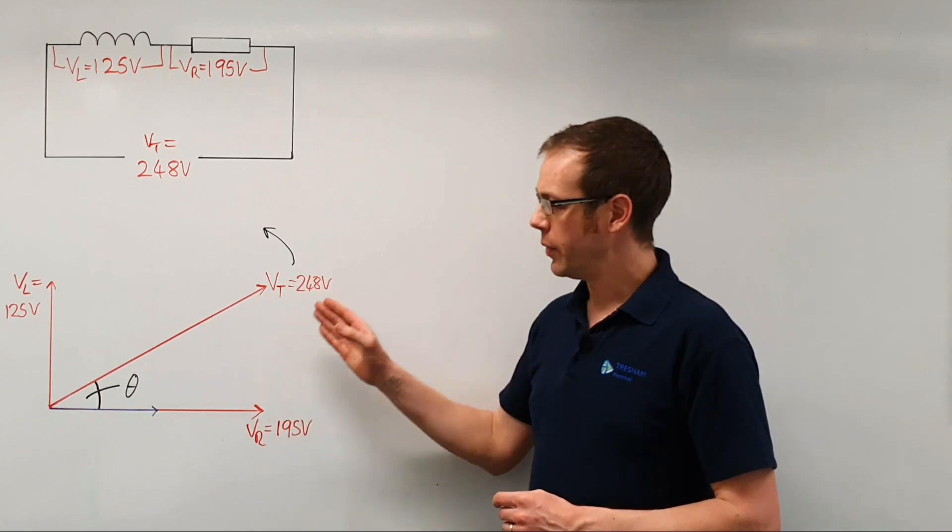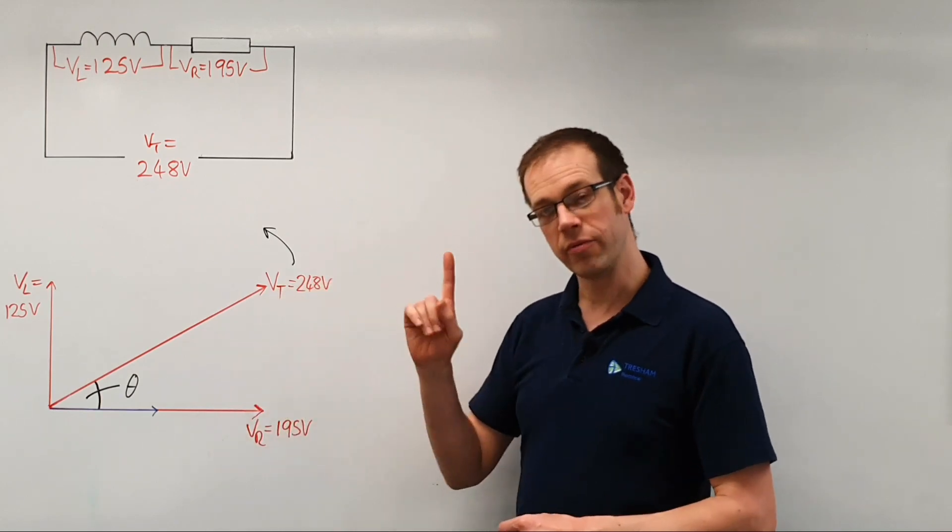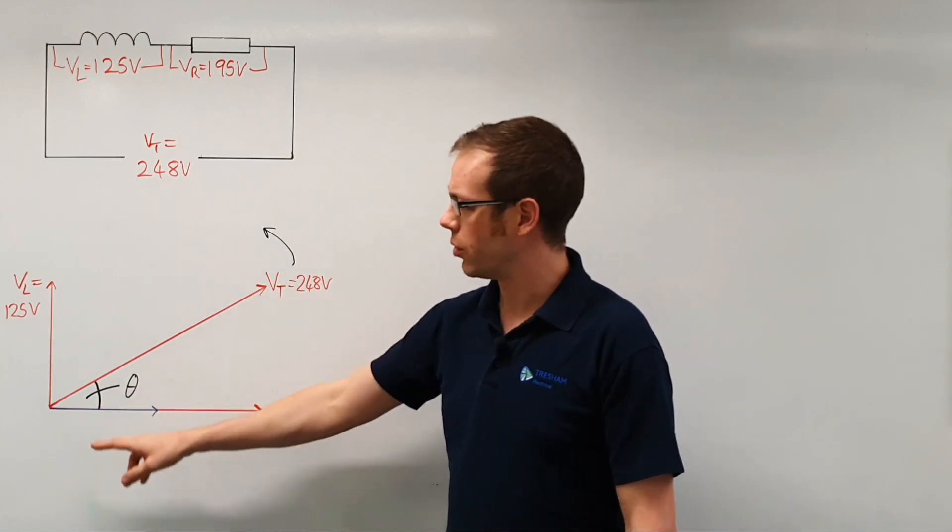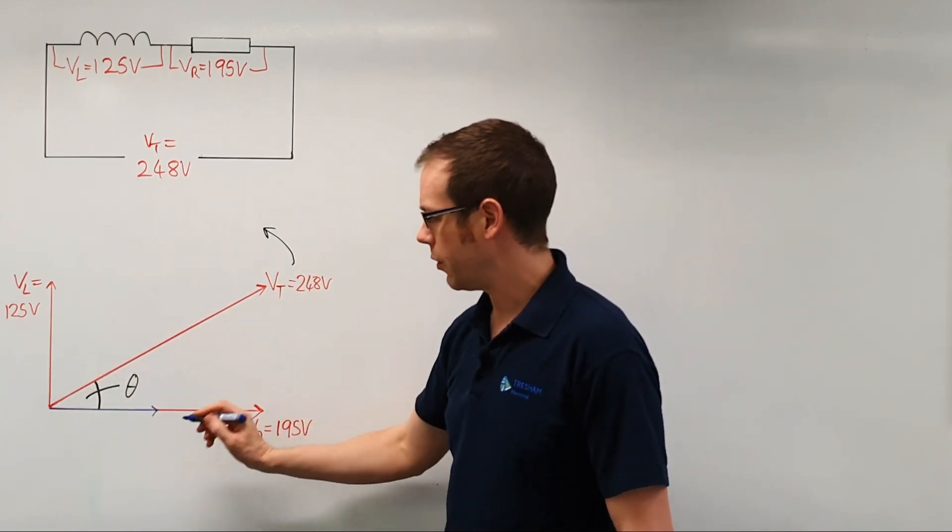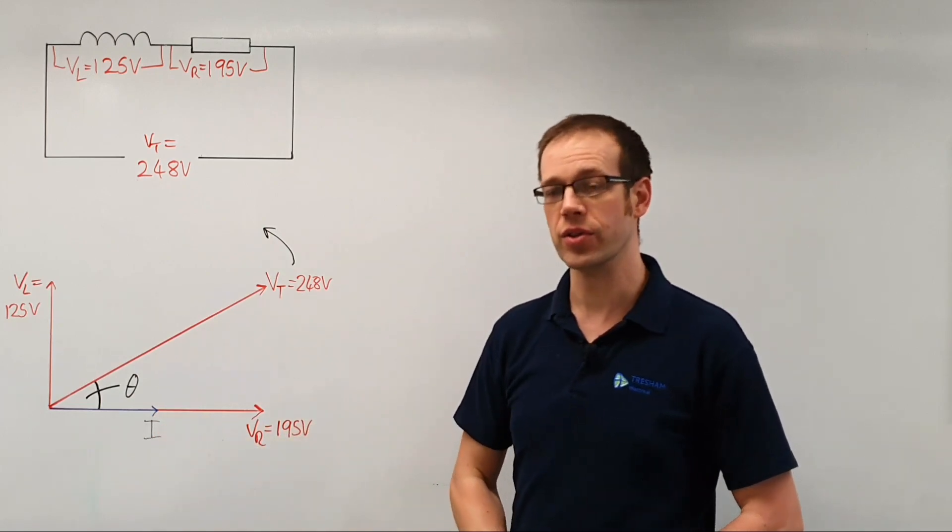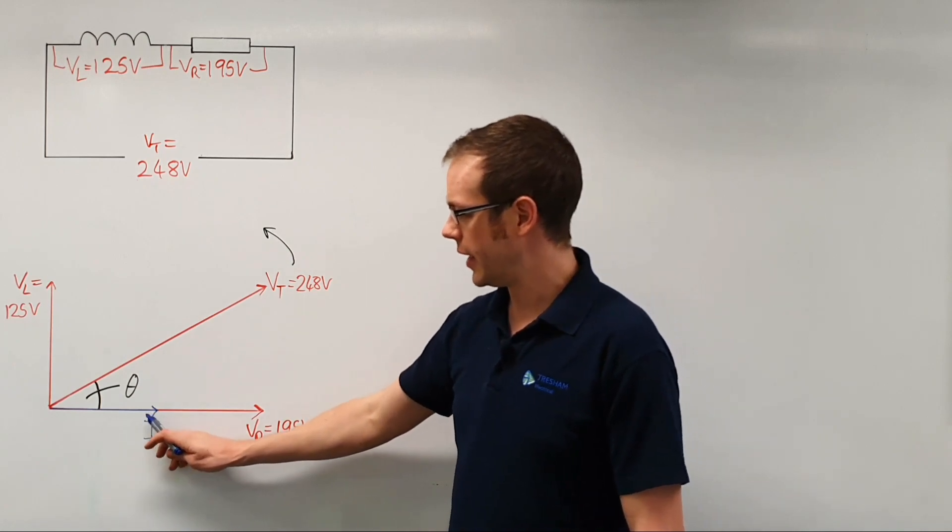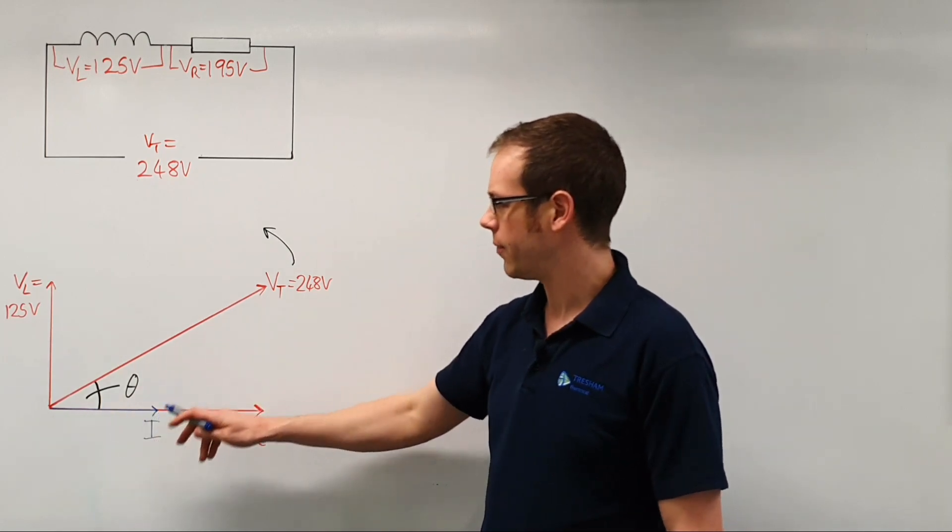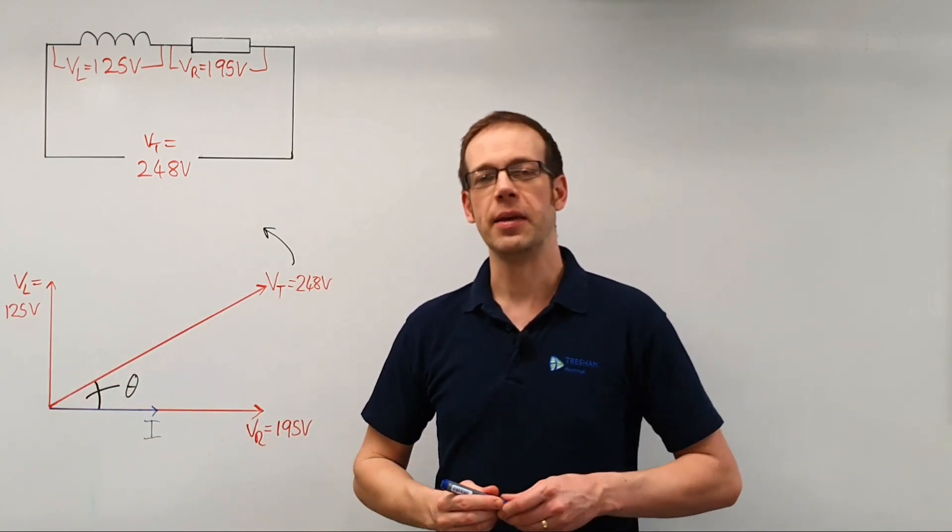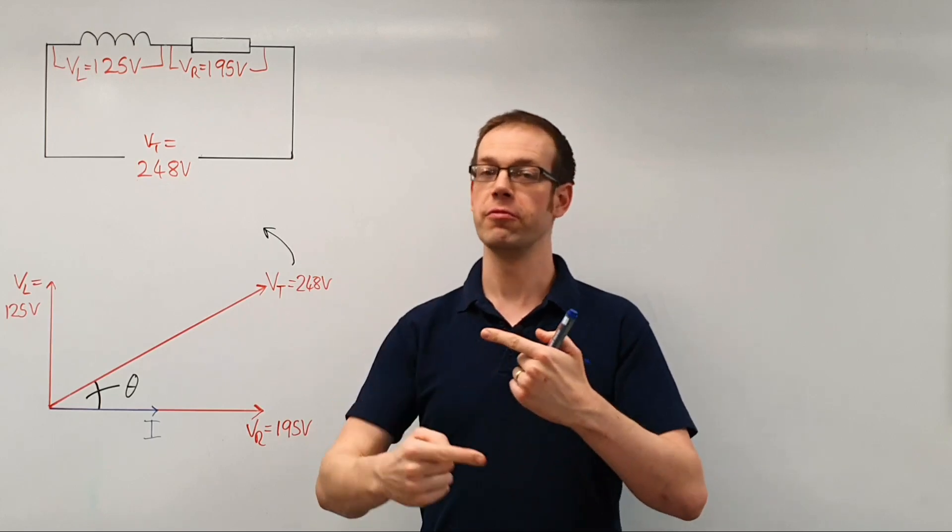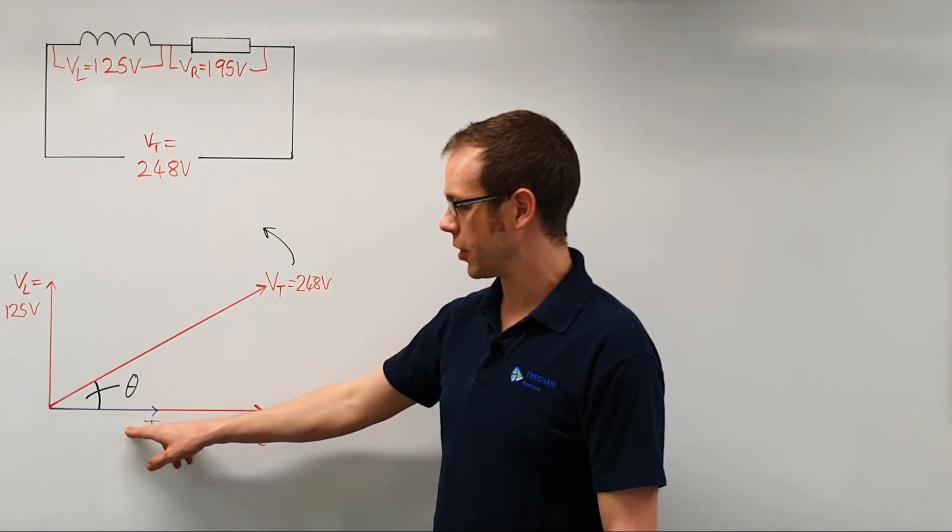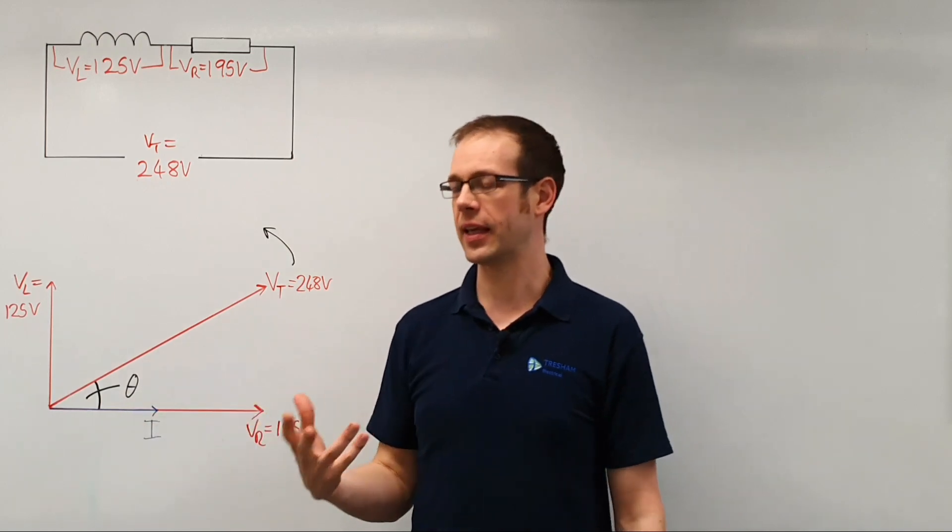When we look at our phasor diagram, there's a couple of really important things we need to bear in mind. We've got our three different voltages spread out on the board, and down here we've got the arrow that represents the current flowing into the circuit. This is the current flowing into the circuit, and this is the voltage being applied to the circuit. I'm making this point because as this next series of videos develops, you'll start to see the importance of the fact that the current here and the voltage here have a particular relationship.